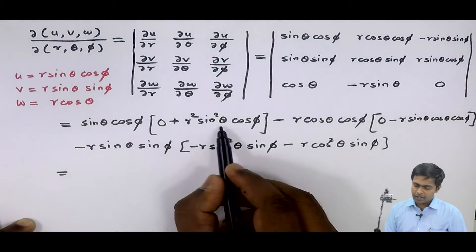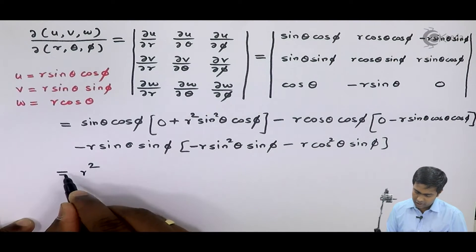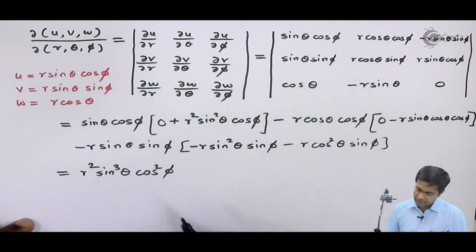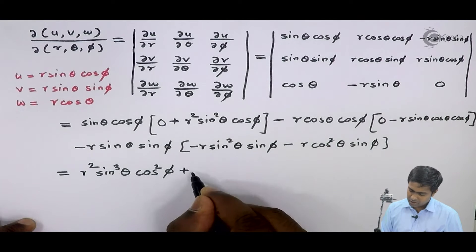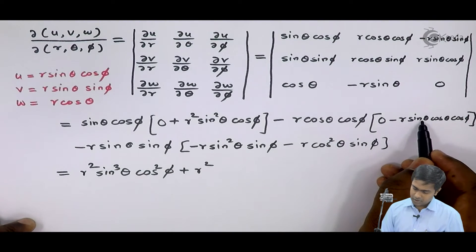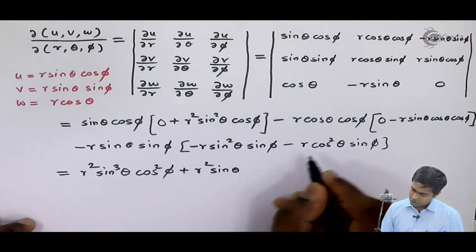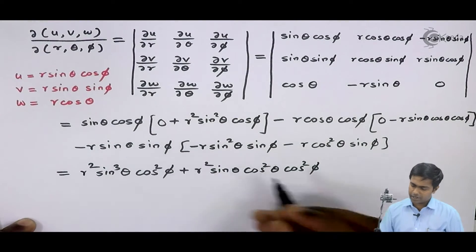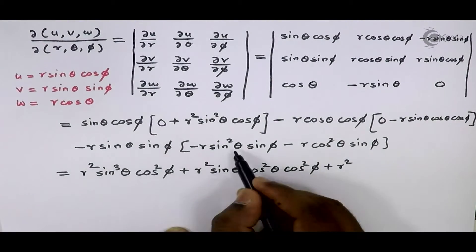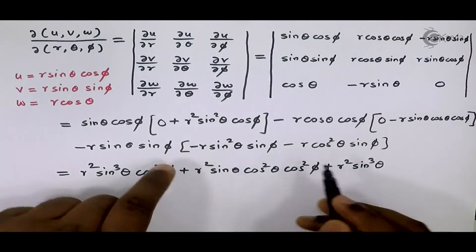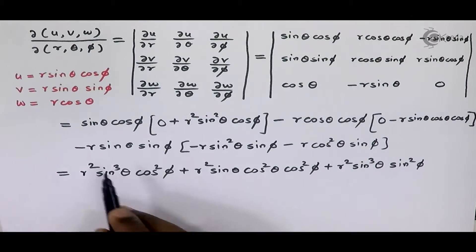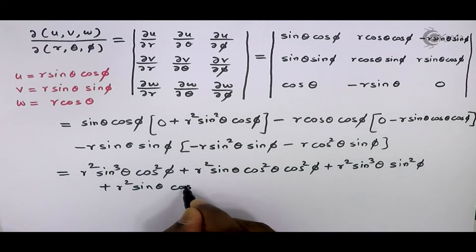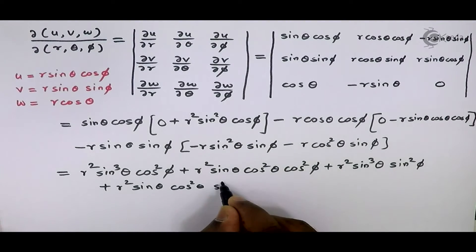If I multiply the bracket with this term we will get r², and sine will become sine cube theta, and this is cos square phi. Similarly here we will get r² sine theta cos square theta and cos square phi. Next here we will get r² sine cube theta and sine square phi. Next this will become r² sine theta cos square theta and sine square phi.